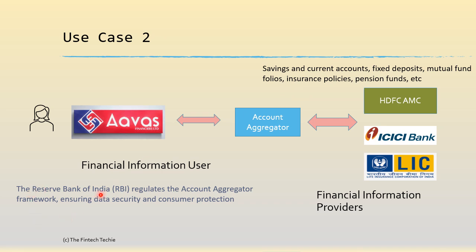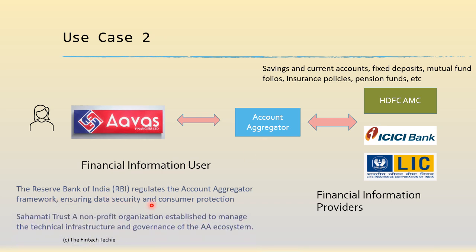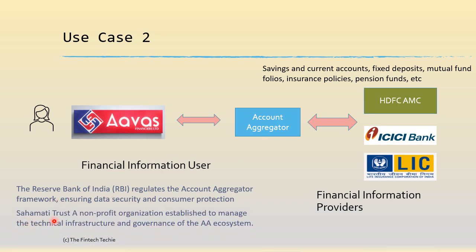The other stakeholders include the RBI, because RBI regulates the account aggregators — and there are quite a few in India — and they ensure data security and consumer protection. There is also the Sahamati Trust, a non-profit organization that helps manage the infrastructure and governance of the AA system. The IT wing of the Reserve Bank of India helps in publishing all the open banking APIs which help connect the user and the provider.